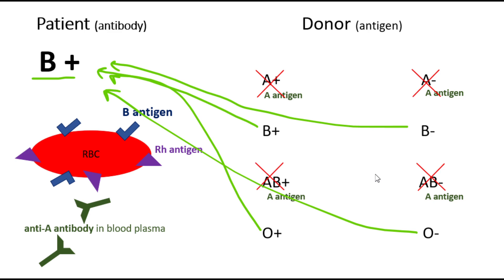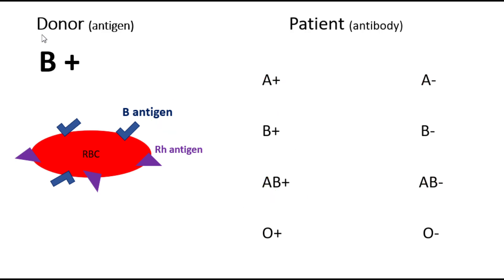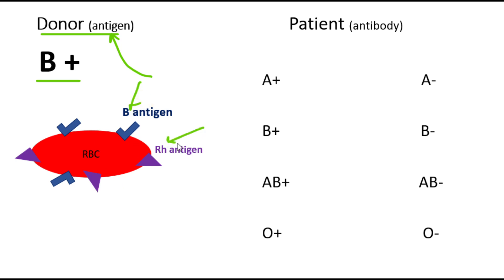Now I switch the story and ask: what if my donor has B positive blood type? In donors, I pay attention to the antigens present on the membrane of the red blood cell. This donor has B antigen and Rh factor. So I'm looking for the patients who accept both of these antigens, one by one.